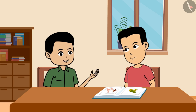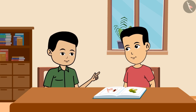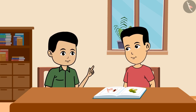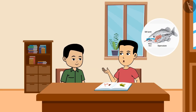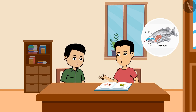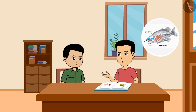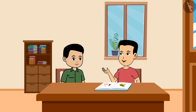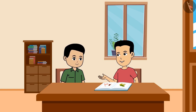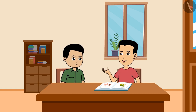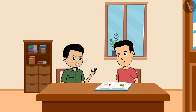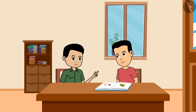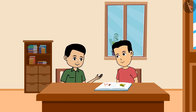Deepak notes that fish can only live in water — taking them out causes them to die. Ramesh adds that fish have gills, unlike humans who cannot breathe underwater. Interestingly, cockroaches can live in water for a long time as well.